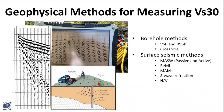Now going on to geophysical methods for measuring VS30. There are quite a few options, and most of them work pretty well — they all work in certain environments. They can loosely be broken up into borehole methods, such as VSP or RVSP, and crosshole methods. And surface seismic methods like MASW, ReMi, S-wave refraction, and H-over-V methods.